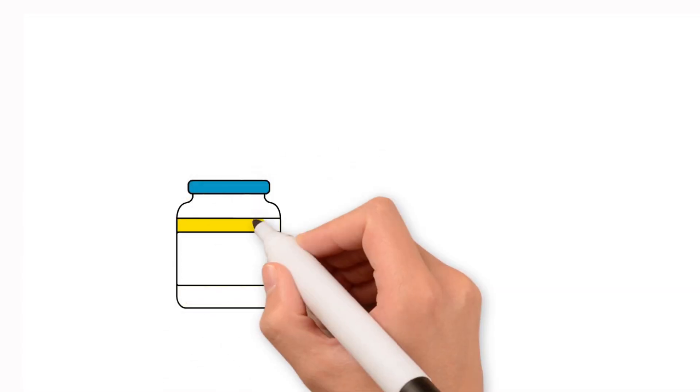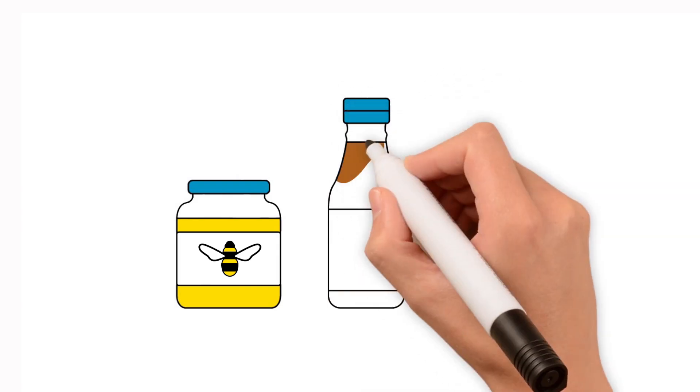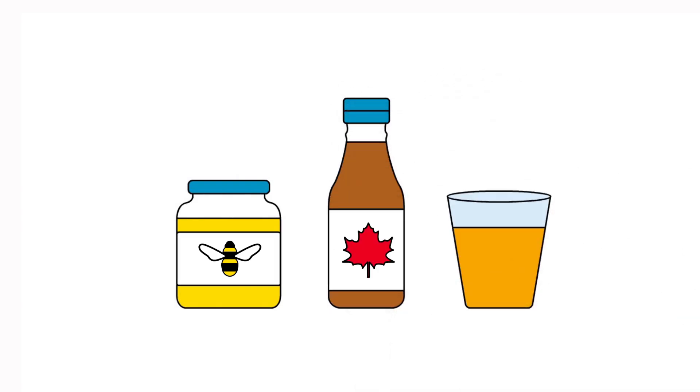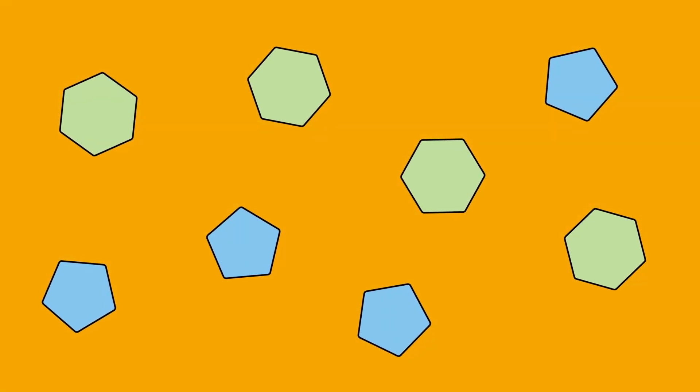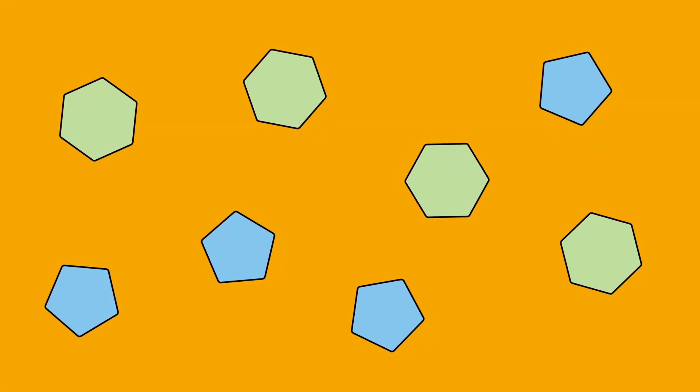Or the sugar that is already in honey, syrup, and fruit juice. These are free because they're not inside the cells of the food we eat.